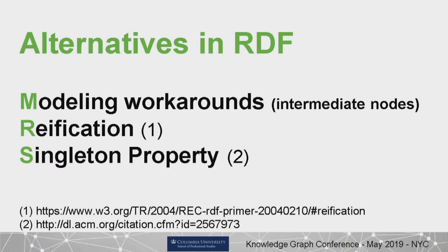It reminds me of what happens in a relational database: if you need to model a many-to-many relationship, you have to create an intermediate join table — that's the only way. Sometimes you'll do it anyway because you want to reify the event. But the fact is that in RDF, that's a necessity.